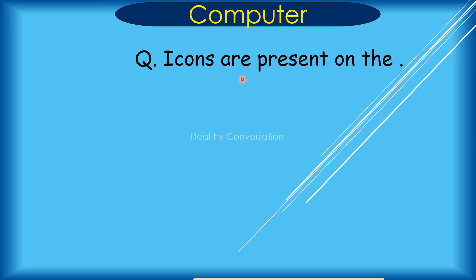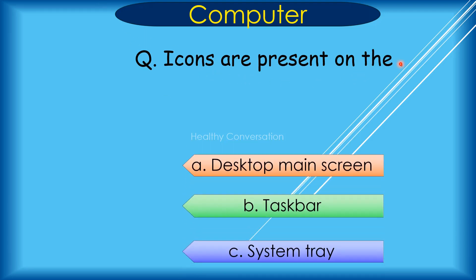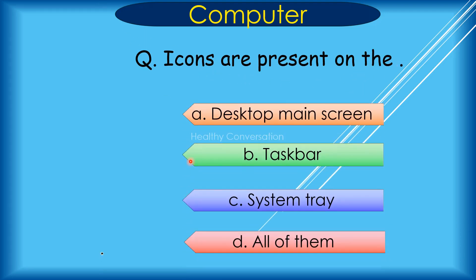Question: Icons are present on the A. Desktop main screen, B. Taskbar, C. System tray, D. All of them. Correct answer is D. All of them.